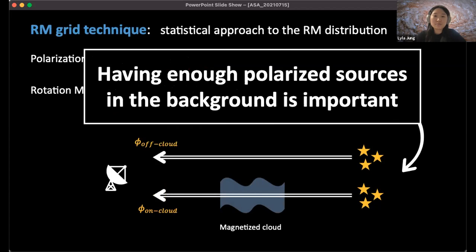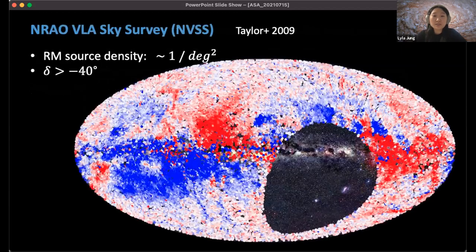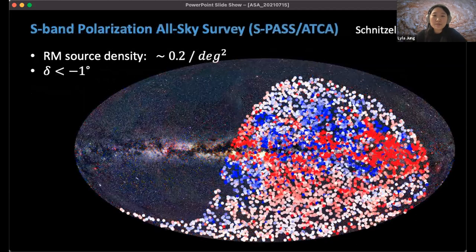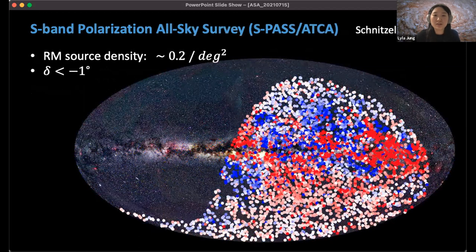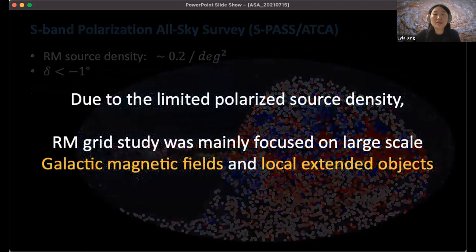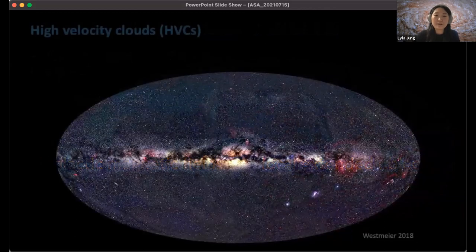For this kind of statistical approach, having enough polarized sources in the background is important. There are publicly available all-sky surveys that provide rotation measure catalogues. The NVSS catalogue covers the northern sky with a source density of about 1 per square degree. In the Southern Hemisphere, we have the ASKAP-ATCA catalogue with a source density of about 0.2 per square degree. Because of this limited polarized source density, RM grid study was focused on large-scale galactic magnetic fields and extended objects like high-velocity clouds.